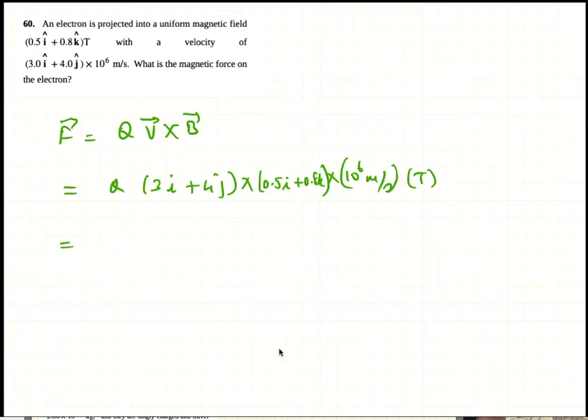Then i cross i is 0, i cross k is minus j, 3 times 0.8 is 2.4, so minus 2.4j.